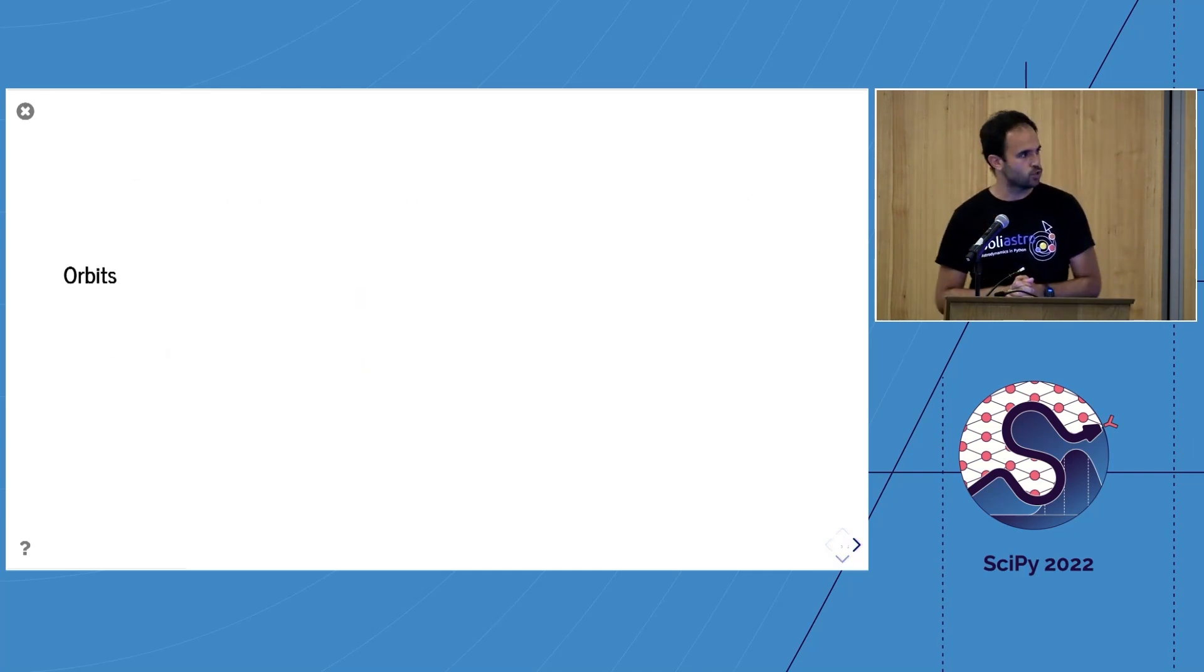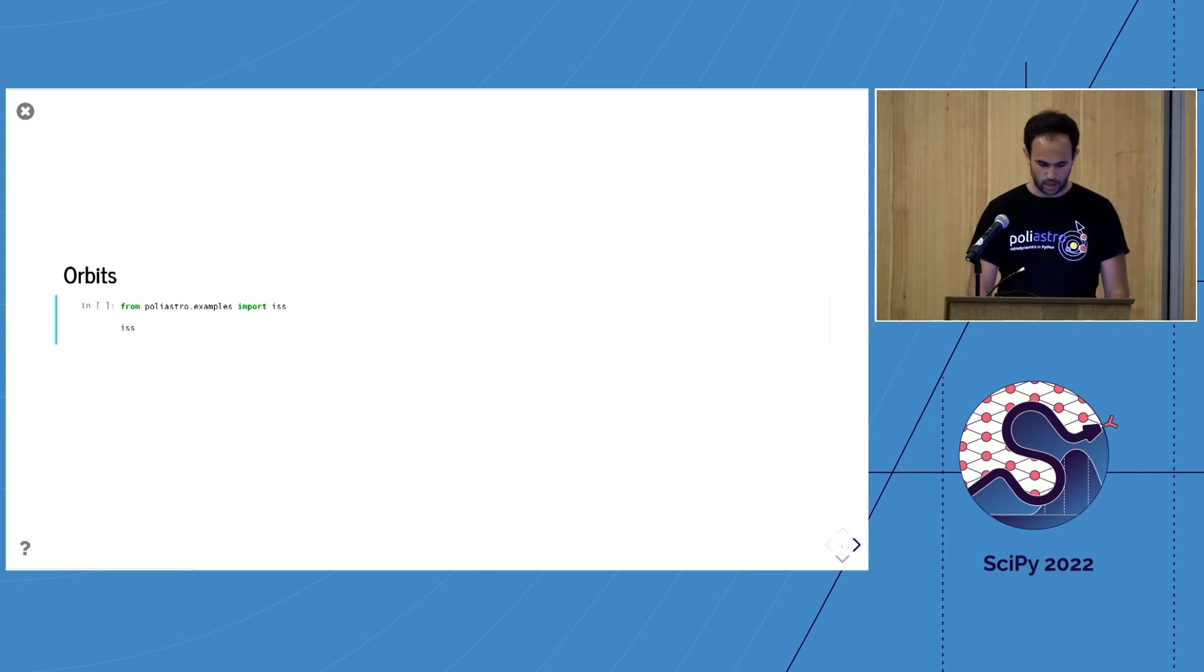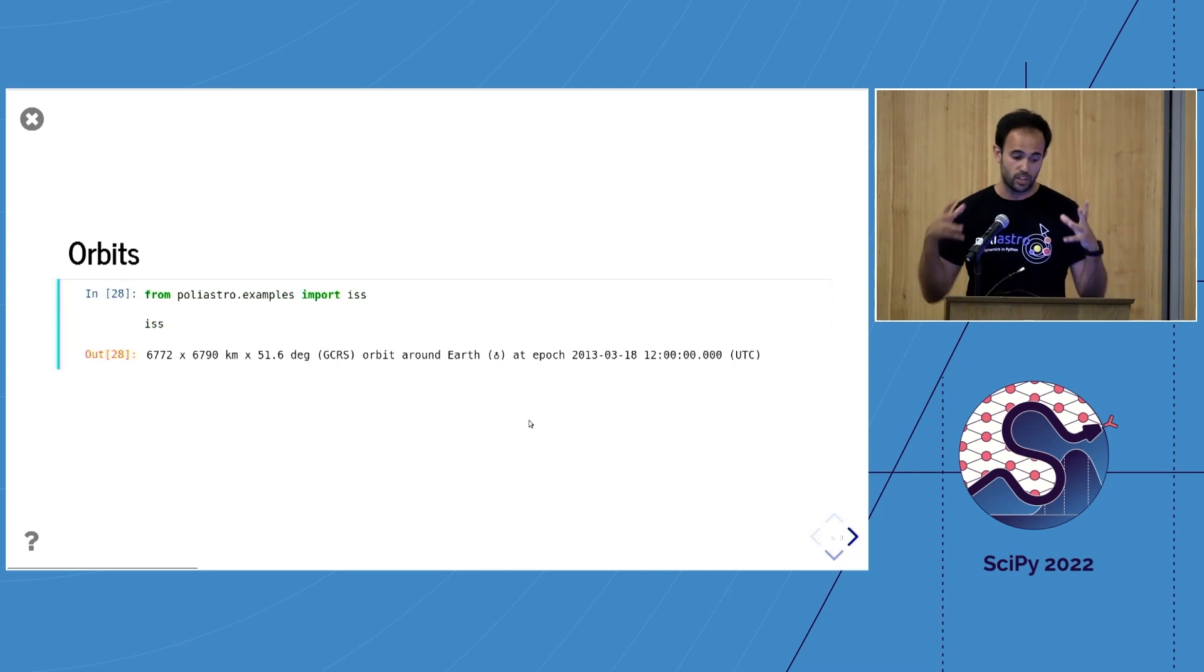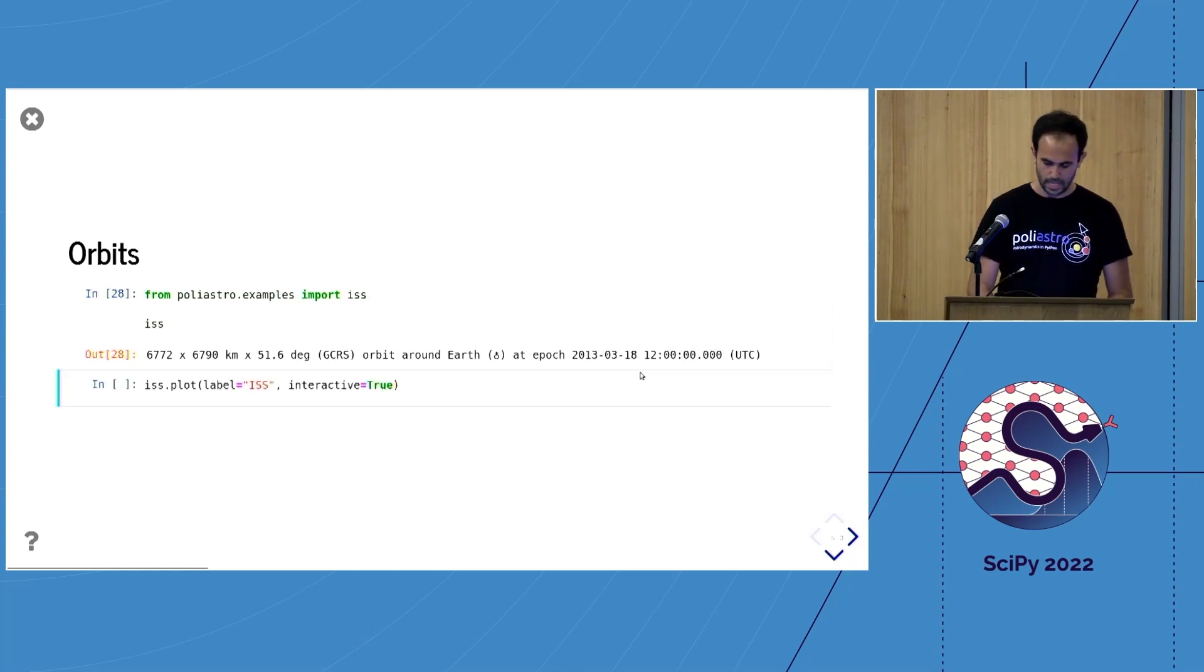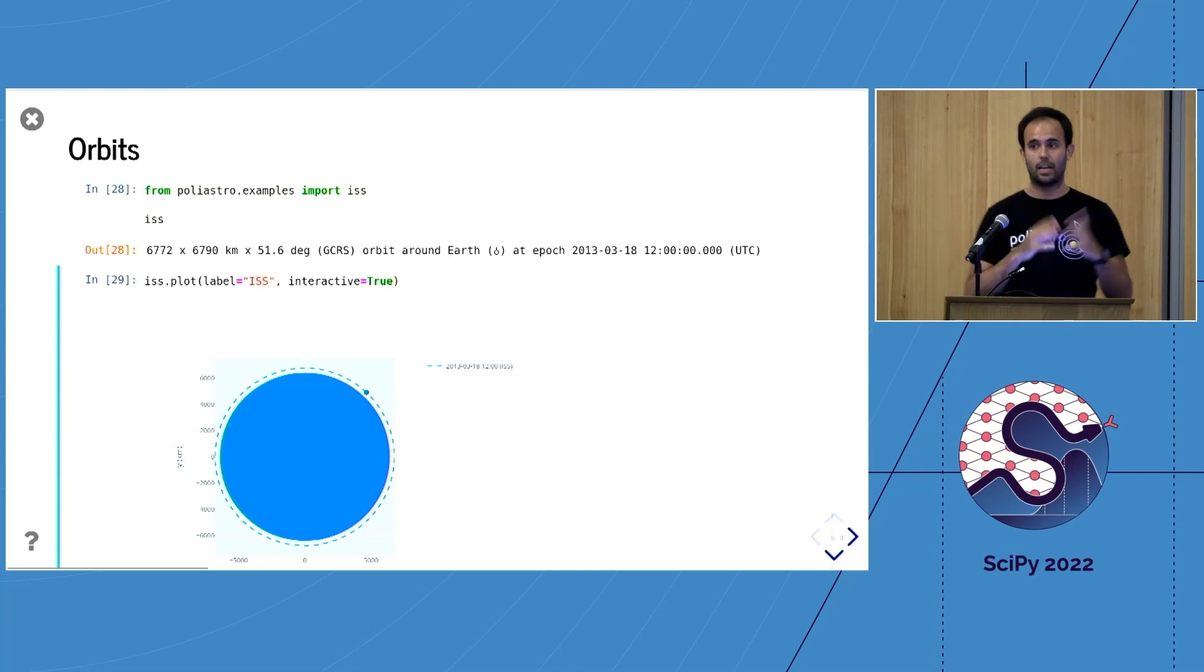How do you use PolyAstro? First, there's the concept of the orbit. There are a number of them available as examples. If you import a reference orbit from the International Space Station, you get this nice representation that tells you the apogee—the longest distance to the earth—is 6,790 kilometers, the perigee, the inclination of the orbit 51.6 degrees over the equator around the earth with this particular epoch.